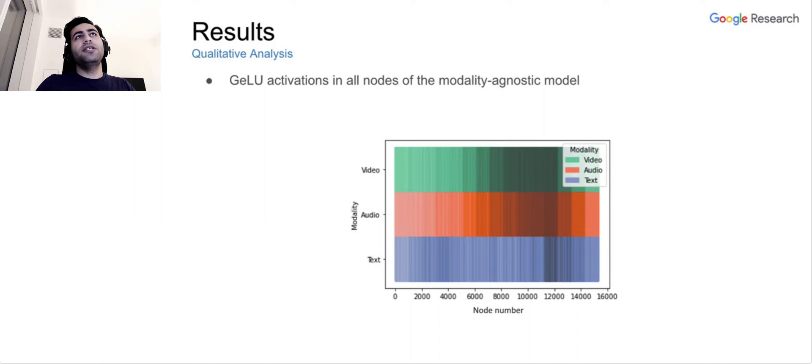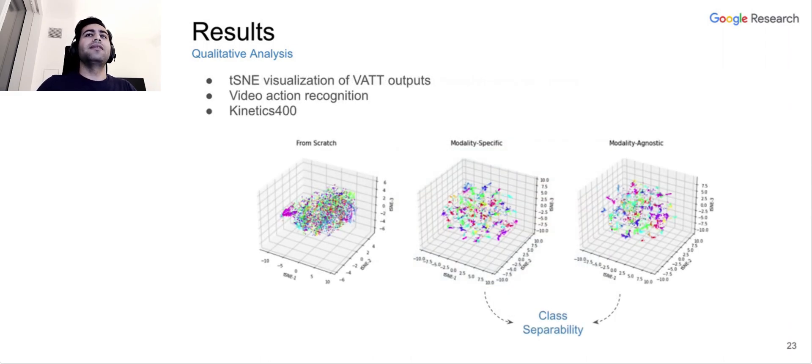Another interesting observation is that by visualizing the GELU activations in the nodes of the modality agnostic model, we see that there are slightly different patterns for activations, even though using the same backbone. So the text has earlier activations, but video and audio have later activations. But from certain points, in the certain layers to the end, the model treats basically all modalities the same. It seems that from certain layers, it has the same level of understanding, semantic understanding of the modality. And finally, we can see that there is a clear class separability when we fine-tune the vision transformer on Kinetics versus training it from scratch.